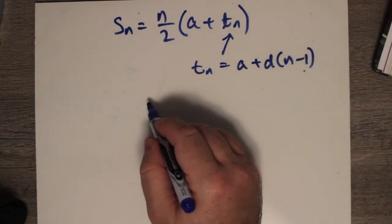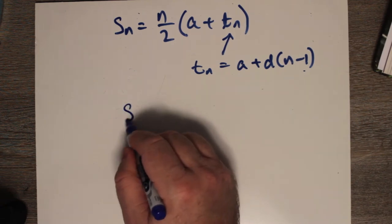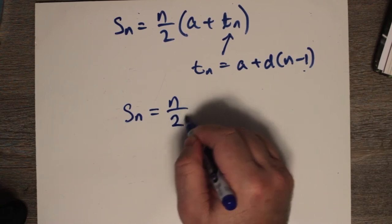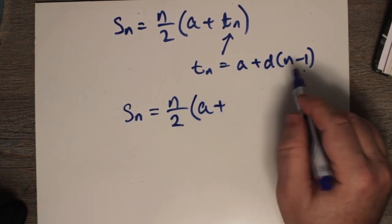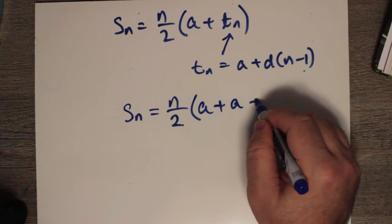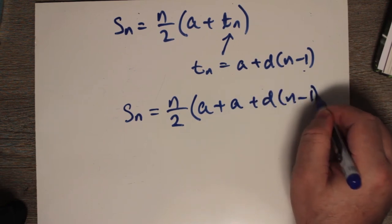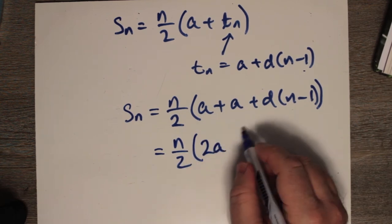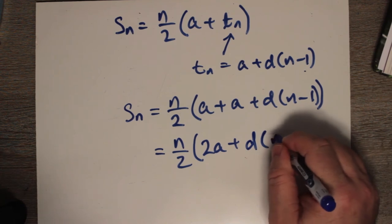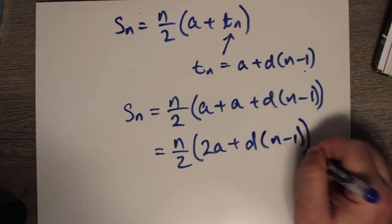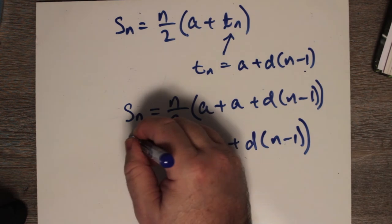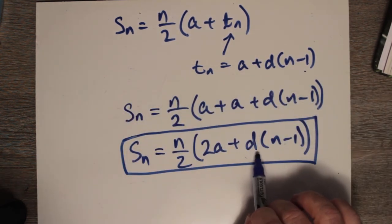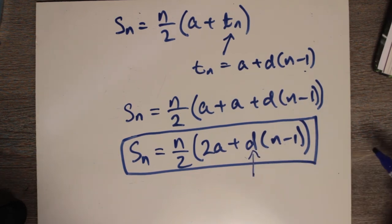So then Sn becomes n/2 times (a + a + d(n - 1)), which simplifies to n/2 times (2a + d(n - 1)). With this Sn, we don't even need to know the last term, but we do need to know the common difference. This is the new piece of information you need to know.